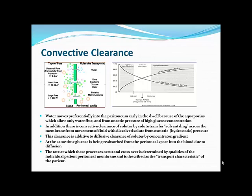Along with diffusive clearance, convective clearance or solvent drag also occurs. Solutes dissolved in the water moving across the membrane are pulled across by oncotic or hydrostatic pressure. The peritoneal membrane is unique as a selective membrane, regulating how much of different types of solutes move across it.